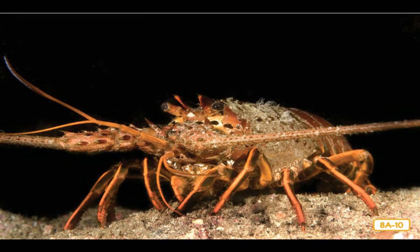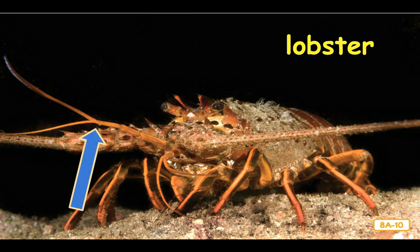Here is another animal that lives in salt water — a shellfish called a lobster. Lobsters live on the ocean floor in openings between rocks. Their hard shell stops most other animals from trying to eat them. They have many legs for crawling and use antennae on their head to feel their way along the murky ocean floor. Their claws, called pinchers, are very strong and are used to defend against predators and to catch and crush food. Lobsters are carnivores — they eat fish, worms, and other shellfish.